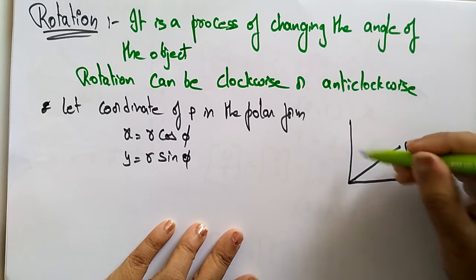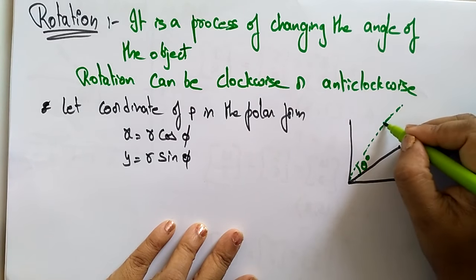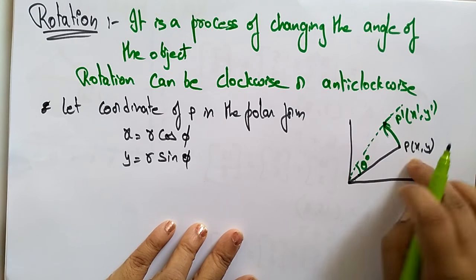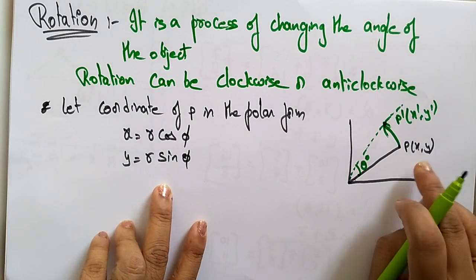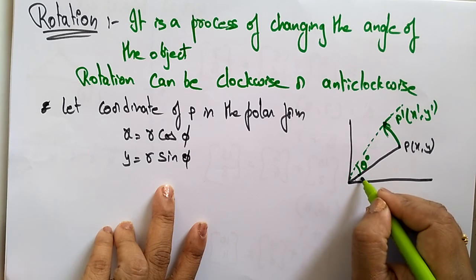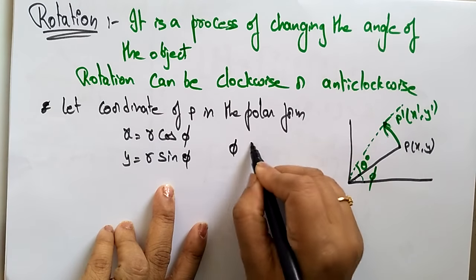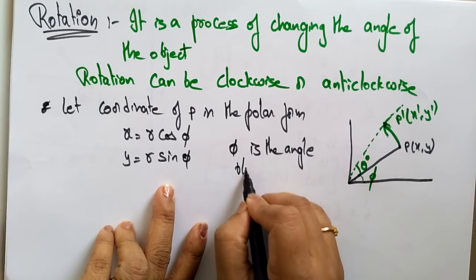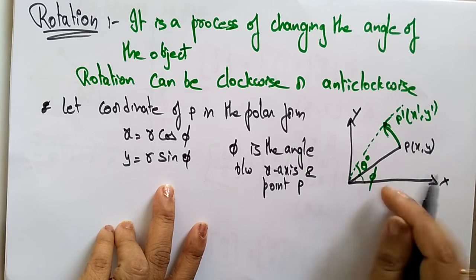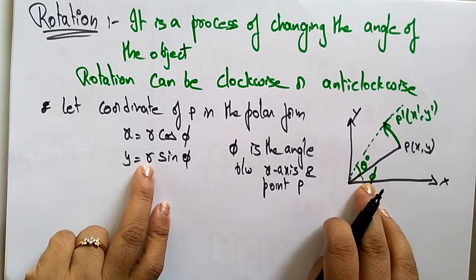I want to rotate this object by some angle theta degrees to get the new point P'(x', y'). The original coordinates are r·cos(phi) and r·sin(phi), where phi is the angle between the x-axis and point P measured from the origin. So phi is the angle between the x-axis and point P.